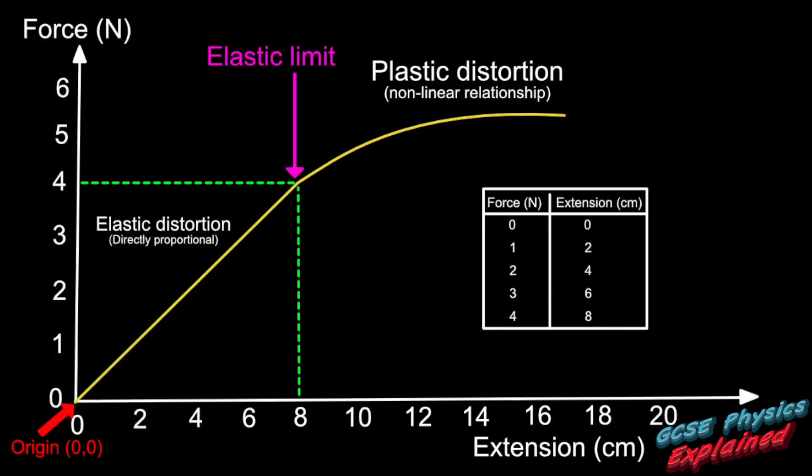Please note, if we plot a graph of force against extension instead of force against length, then the line will be directly proportional at first, which means that the line goes through zero and is also linear.